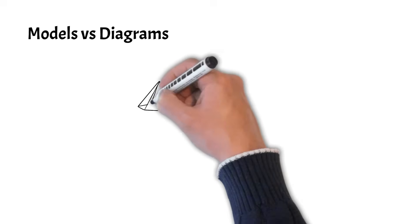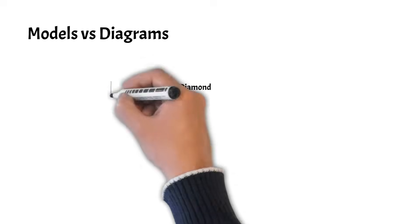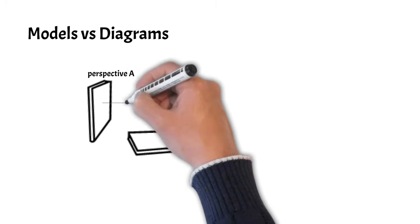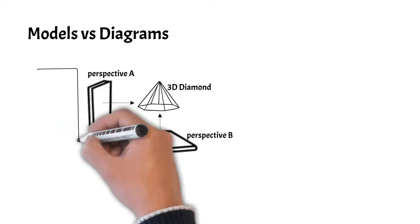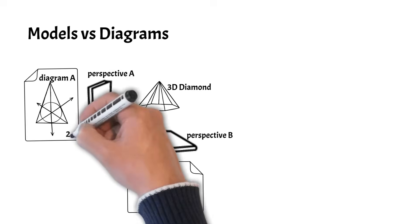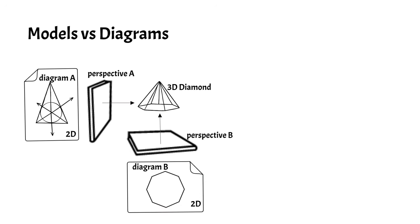There is an important distinction between the system model and the diagrams. Let's use a 3D physical diamond as an analogy which represents our model. Engineers would take the three-dimensional diamond and then take snapshots from different angles. The data from the snapshots, or perspectives, would be rendered in two dimensions on a diagram. The sum of the diagrams would give the engineer the information needed to cut the diamond to spec.